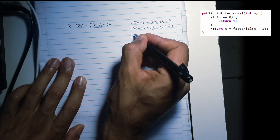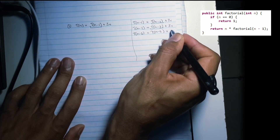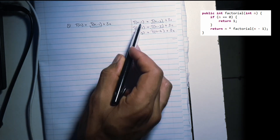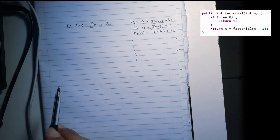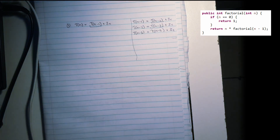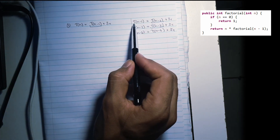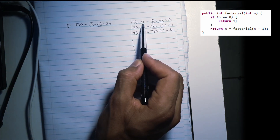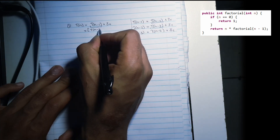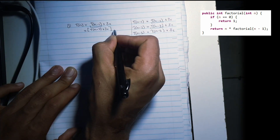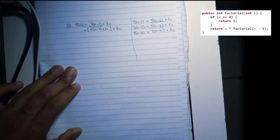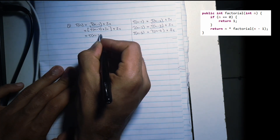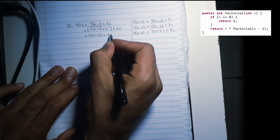And what's T of N minus three? We're going to substitute these different combinations in our original expression. So in our original expression, we're going to first substitute T of N minus one equals T of N minus two plus 3C. And if you simplify this, we have T of N minus two plus 6C.